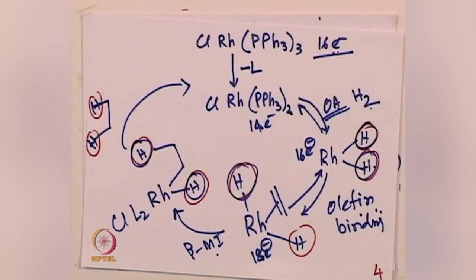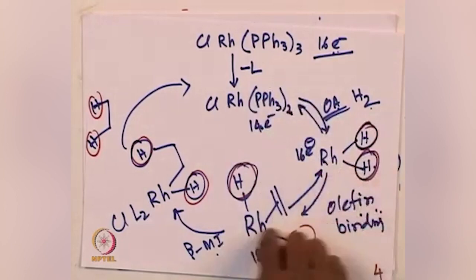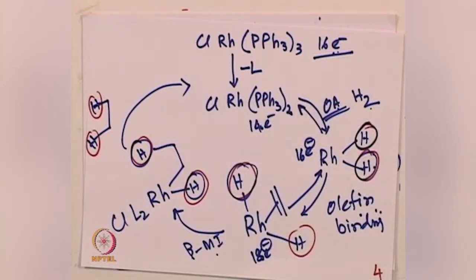From there, the hydride attacks — this is the beta migratory insertion step. So: oxidative addition, olefin binding, beta migratory insertion gives you the rhodium alkyl dihydride intermediate, from which reductive elimination gives the final product. Both hydrides being incorporated come from the hydrogen gas. Notably, none of these steps have been spectroscopically characterized for Wilkinson catalyst, yet they are feasible mechanistic steps. One must also remember that an observed intermediate in a catalytic cycle is not necessarily part of the main cycle — it could be an off-cycle intermediate.